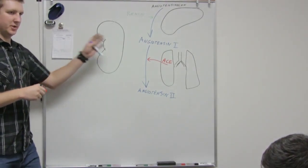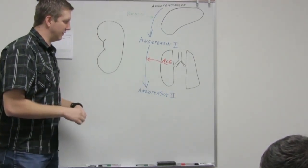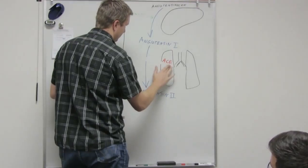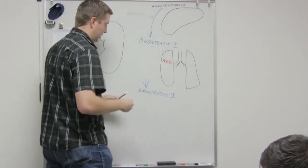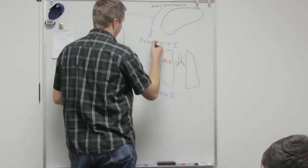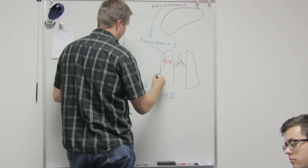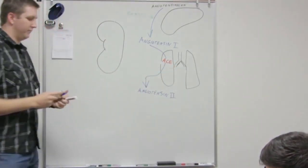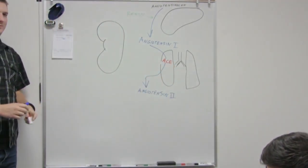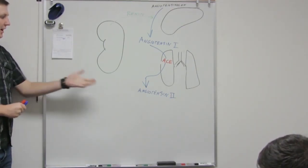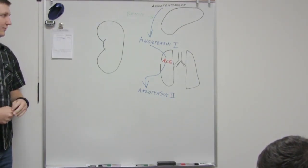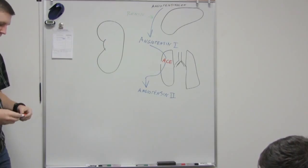So as the blood flows through the lungs, this enzyme, I guess I should draw this more. We're going to go through the lungs here, and we get converted into angiotensin two. Now angiotensin two is active, now it can do its job.